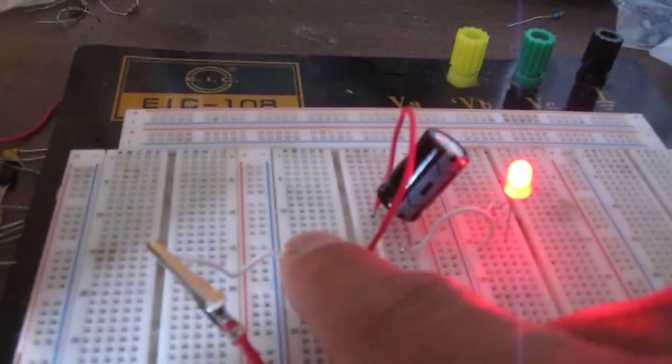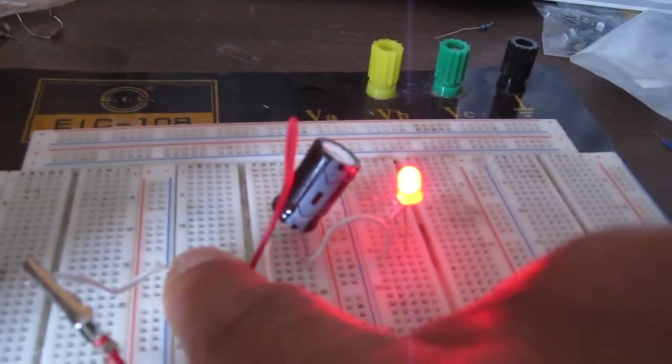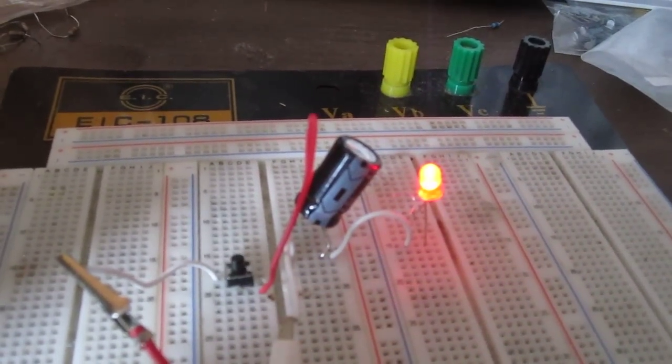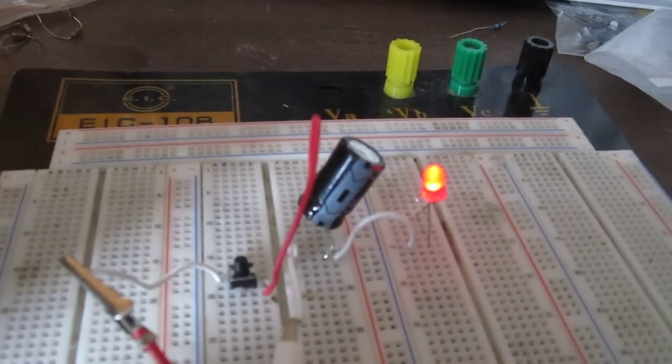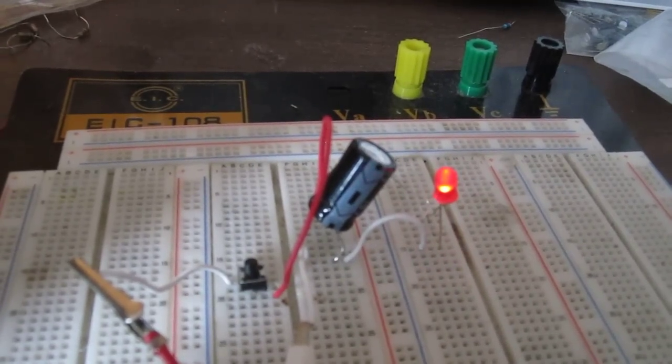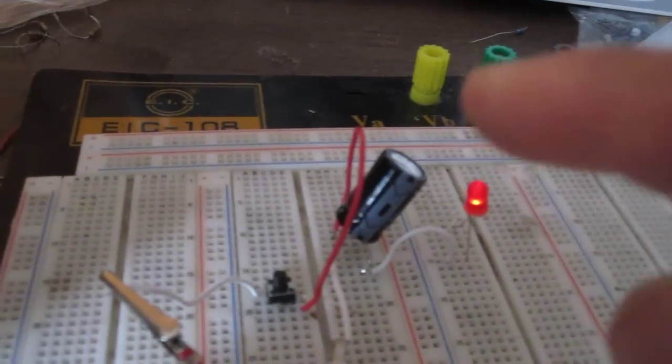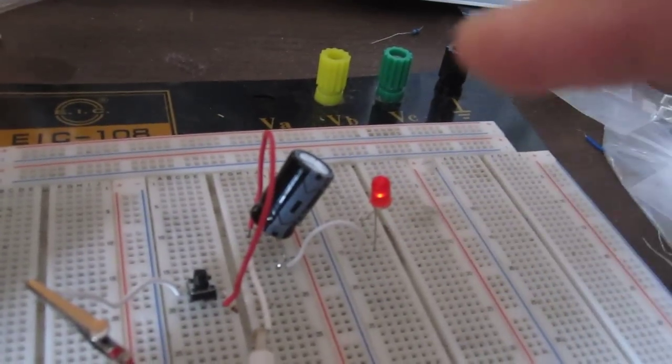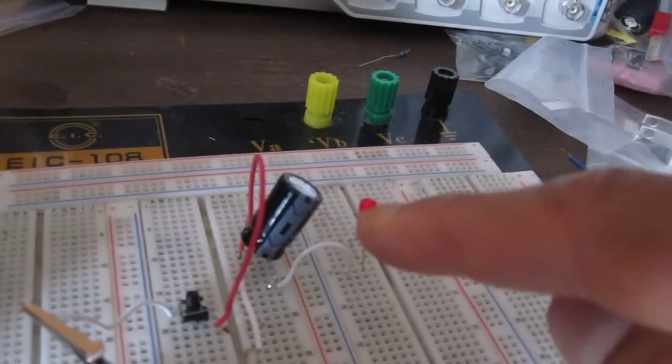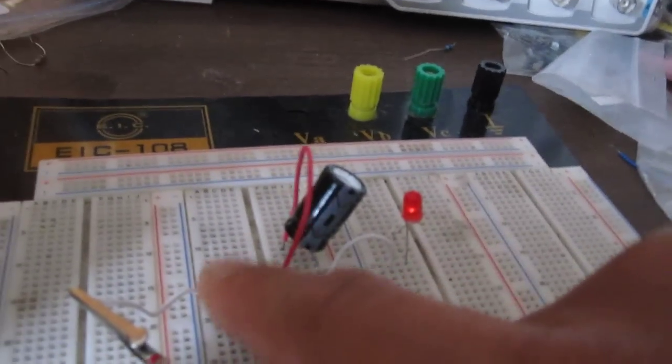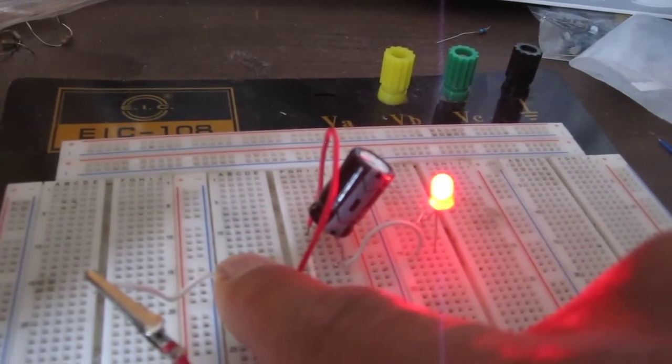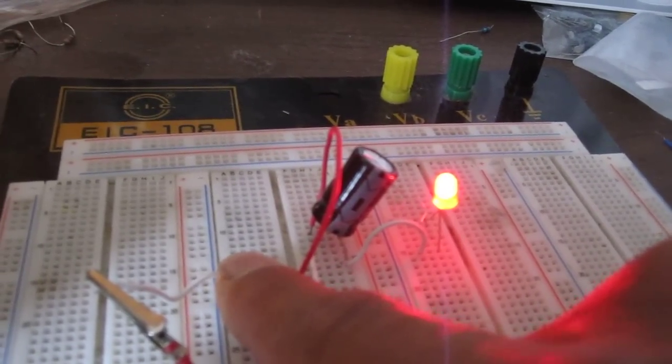Now I'm going to press down again, I'm going to let go. As you can see it stayed on for a much longer period of time just because we're using now almost more than three times the capacitance we were using before. This is again a 3,300 microfarad capacitor. If I let go, it stays on.